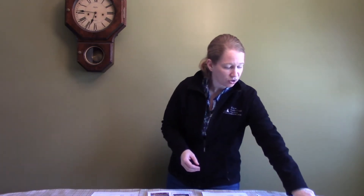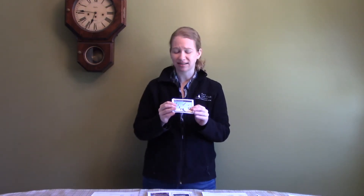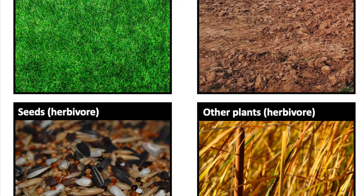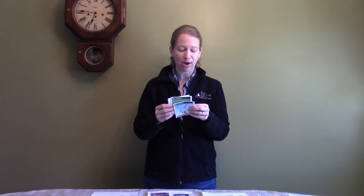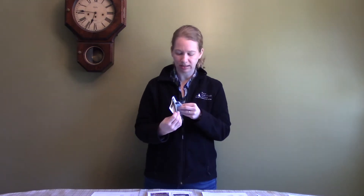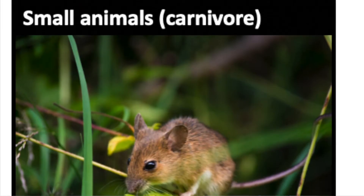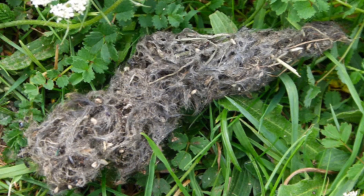I've also included the key so you can check if you did it right. Once you've matched the scat to the animals, you can also use the food cards. Try to match up the food cards to the scat — the food cards give you an idea of what different animals eat, for example birds, or grass, or small animals.